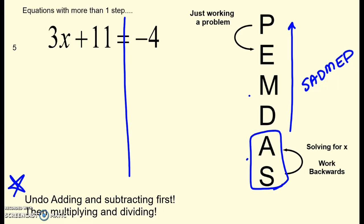So draw my line. I need to find the variable. It is right here in yellow. So that's what I'm trying to get alone by itself. Undo adding and subtracting first. Here I see plus 11. So to undo that, the inverse operation would be minus 11 or subtract 11 from both sides. Cross out what cancels. Bring everything down. Negative 4 minus 11 takes me to negative 15.